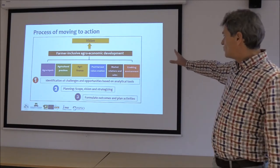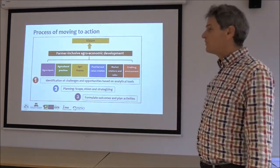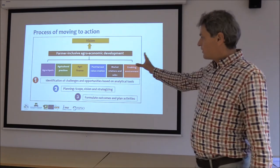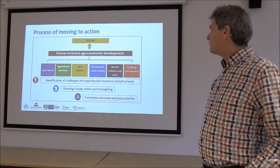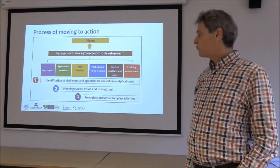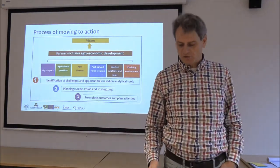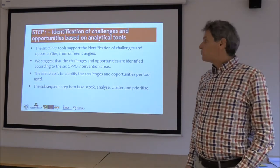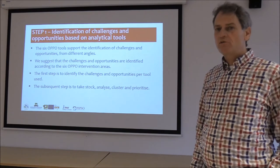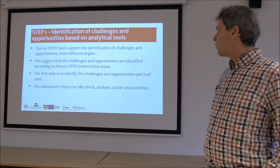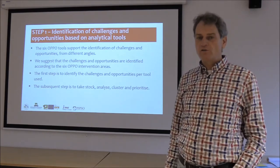The three steps are shown in a figure. We will talk about the vision — the far-away future, maybe 15, 20, or 25 years from now; it's really your dream. You probably need interventions in six different areas. The first step is to identify all challenges and opportunities based on the OPPO analytical tools, then move to planning. We use the six OPPO analytical tools for this, and suggest that the challenges and opportunities identified are linked to the six OPPO intervention areas.